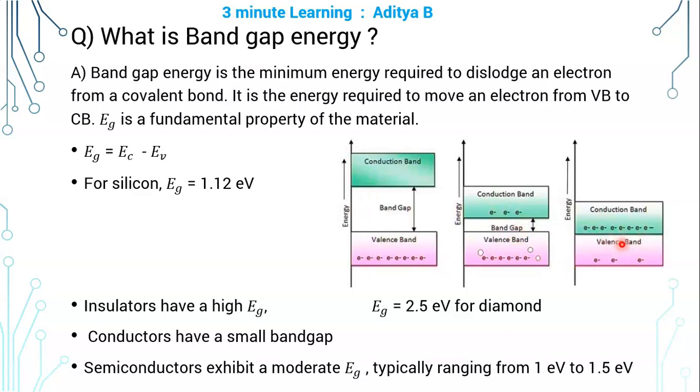Conductors have a very small band gap, or valence band and conduction band coincide. That is, EG is equal to zero. Sometimes they overlap also. That is, without much energy, electrons move from valence band to conduction band and hence they easily conduct, and hence the name conductors.